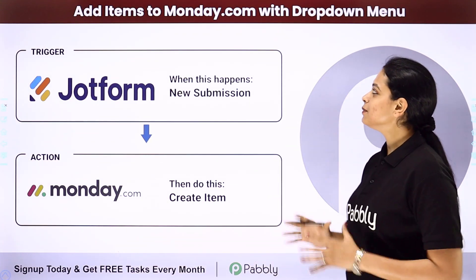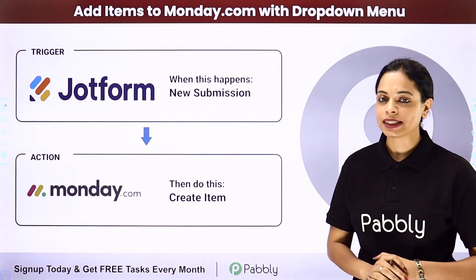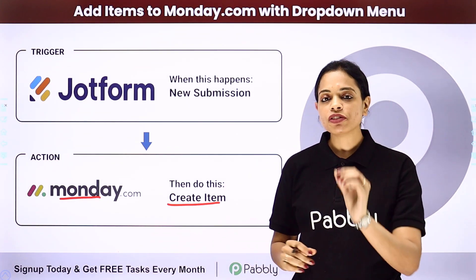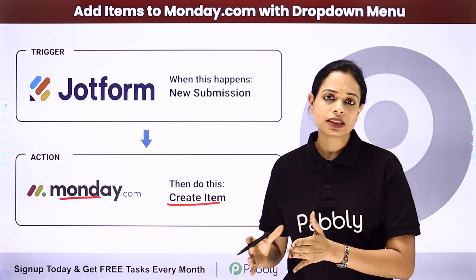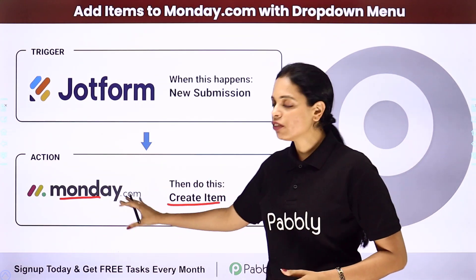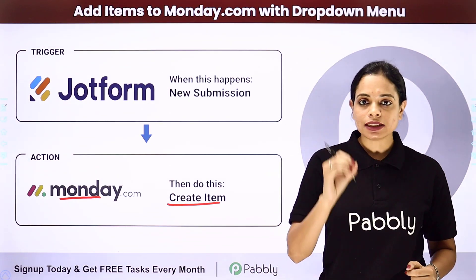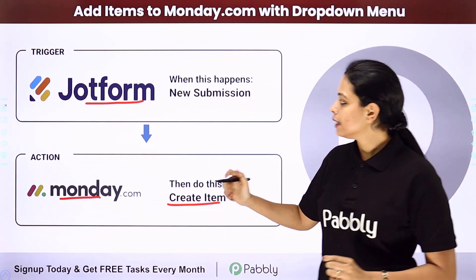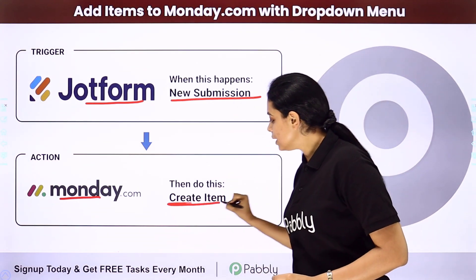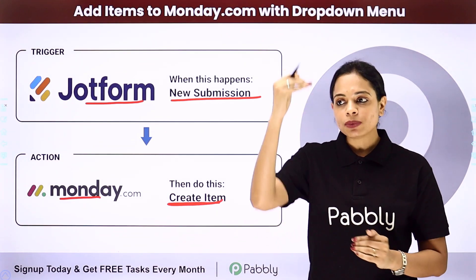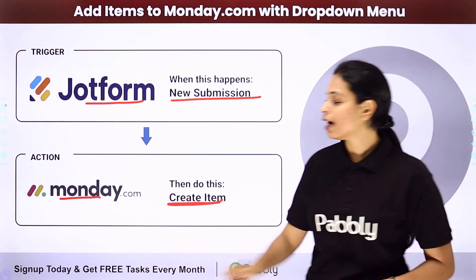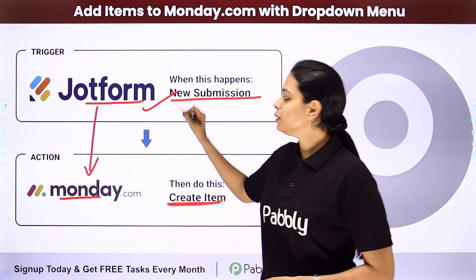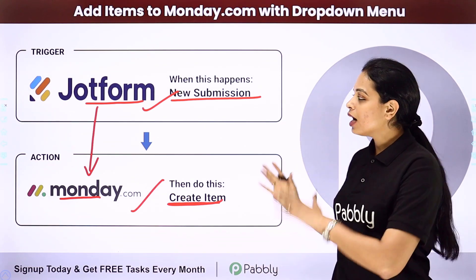In this video, we are going to see how to add items to Monday.com with a drop down menu using Pabbly Connect. Let's say that you want to create an item on Monday.com, which is a project management software, and you want one particular field to have a drop down. Basically, you are creating a task and it has different statuses, so you want that to be specified on Monday.com using a drop down menu.